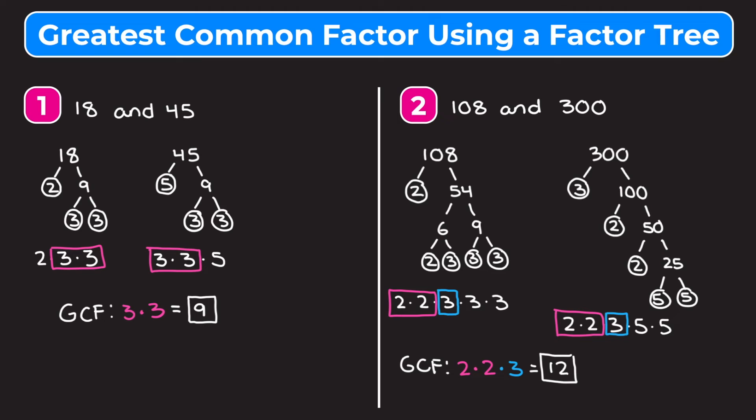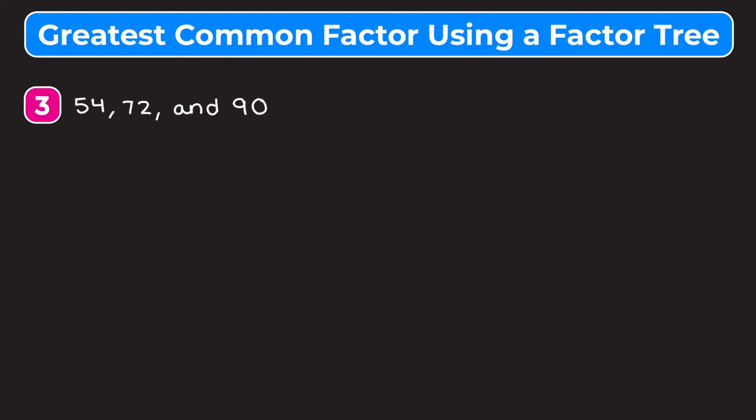Let's go through one example where we're finding the greatest common factor between three numbers. For this last example, we're finding the GCF between 54, 72, and 90. Even though this is a little more challenging because it's three numbers, I encourage you to pause the video and try it on your own, then watch me work through it to make sure you've done it correctly.